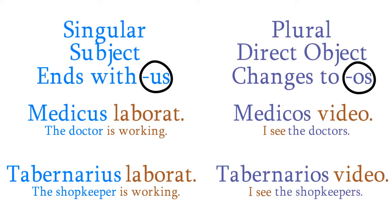In the first sentence, tabernarius ends with us, the singular subject ending. In the second sentence, tabernarios is a plural direct object. We know this because it ends with the letters os.